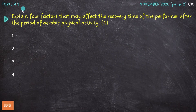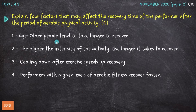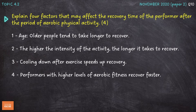Next question on topic 4.2: explain four factors that may affect the recovery time of the performer after a period of aerobic physical activity for four marks. My first factor is age — older people tend to take longer to recover. Second, the higher the intensity of the activity, the longer it takes to recover. Third, cooling down after exercise speeds up recovery. Fourth, performers with higher levels of aerobic fitness recover faster.